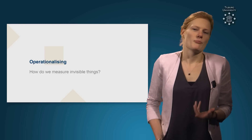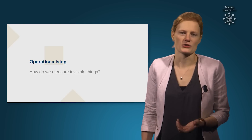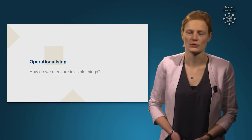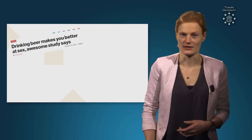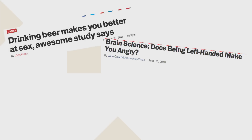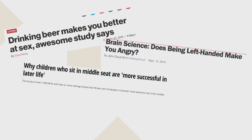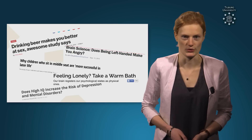If you want an example of something that is measured, all you need to do is open a paper. Look at these headlines: 'Drinking beer makes you better at sex, an awesome study says.' Or: 'Brain science — does being left-handed make you angry?' Or: 'Children who sit in the middle are more successful later in life.' 'Feeling lonely? Take a warm bath.' Or finally: 'Does high IQ increase the risk of depression and mental disorders?'